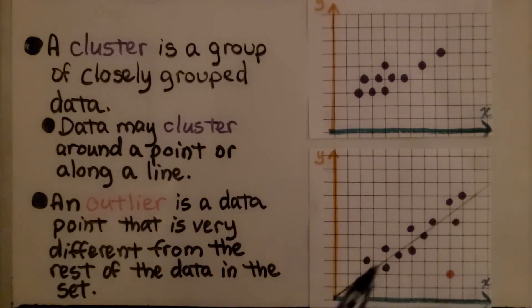or along a line. An outlier is a data point that's very different from the rest of the data in the set.